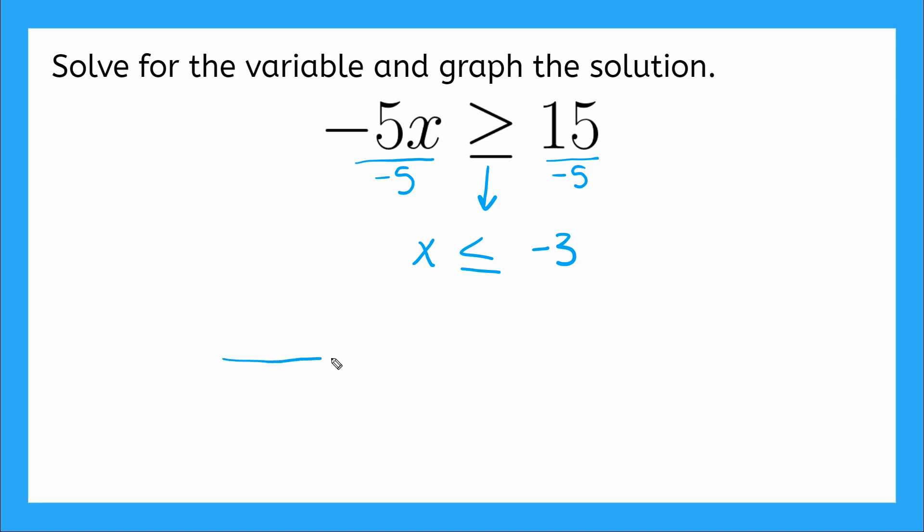We can graph that solution if we get out our number line. We'll put our 0 right here. We got negative 1, negative 2, negative 3, negative 4. And over here, we have 1, 2, 3. Okay, where do I start my solution set? At negative 3, right? Open or close circle. Close because negative 3 is included.